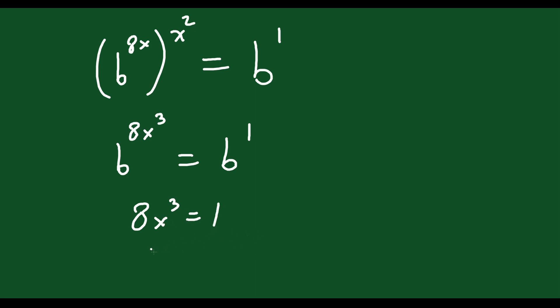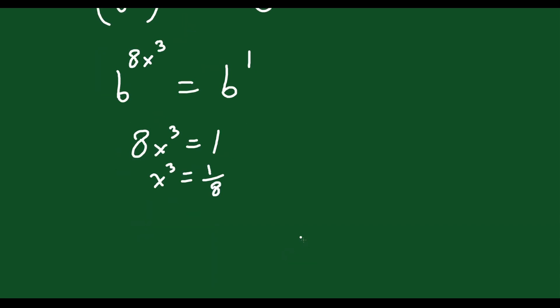Divide both sides by 8, x cubed is equal to 1/8. Cube root both sides and you get x equals one half. That was a neat little question — there's a little trick to it. You had to figure out where to start, but once you're on your way, you're able to get the answer, no problem.